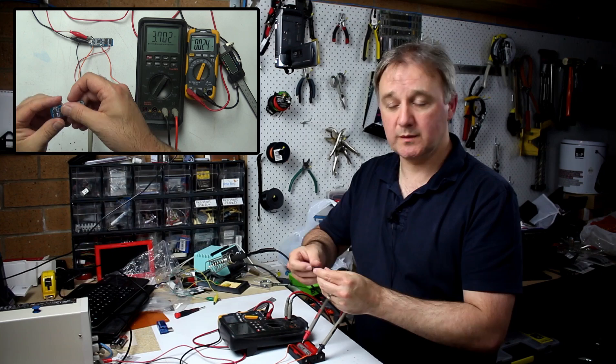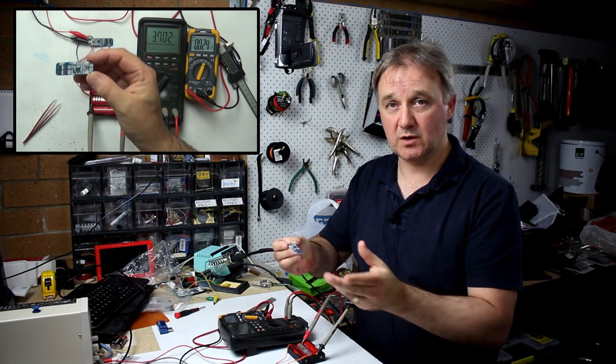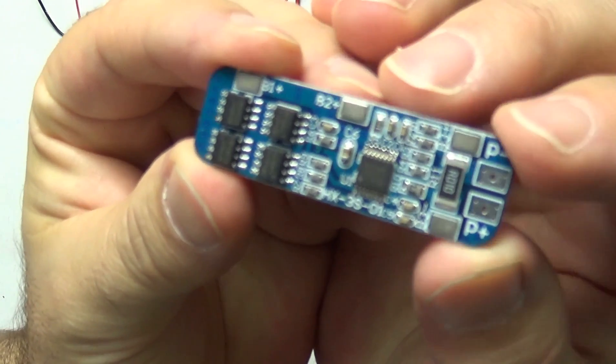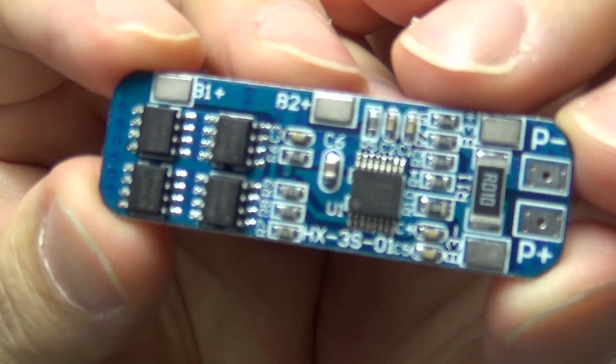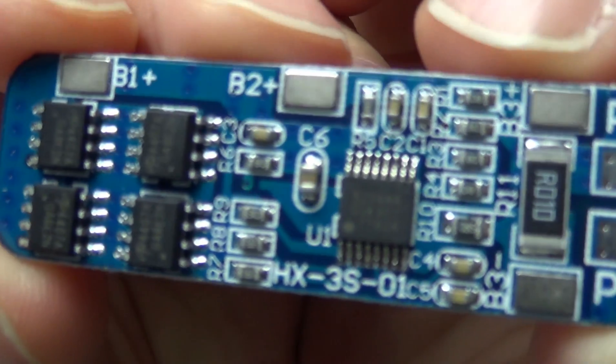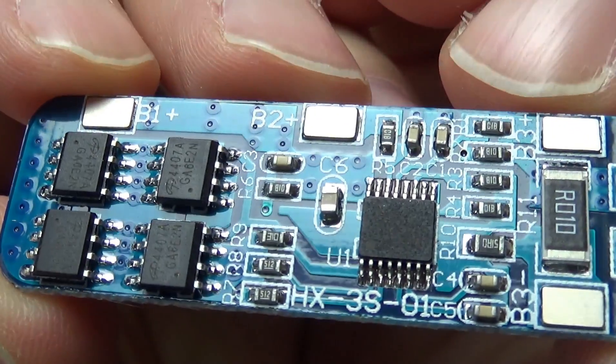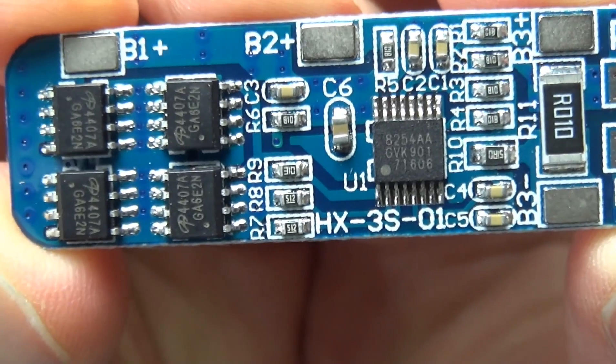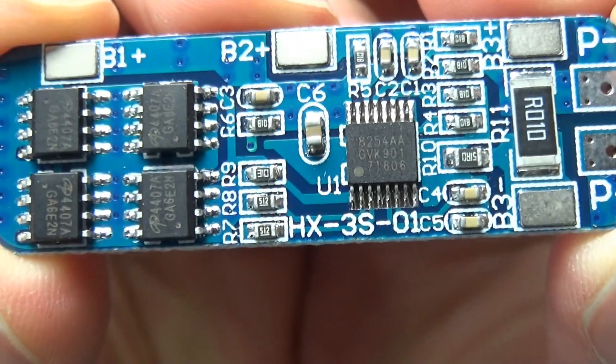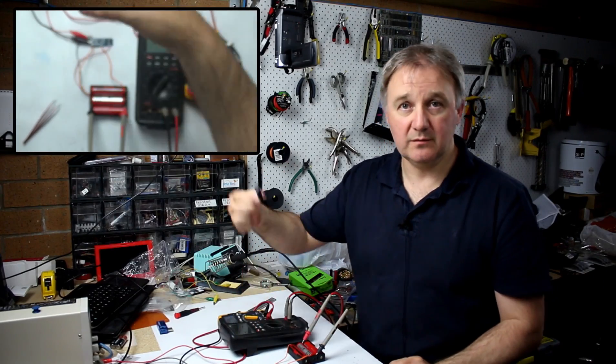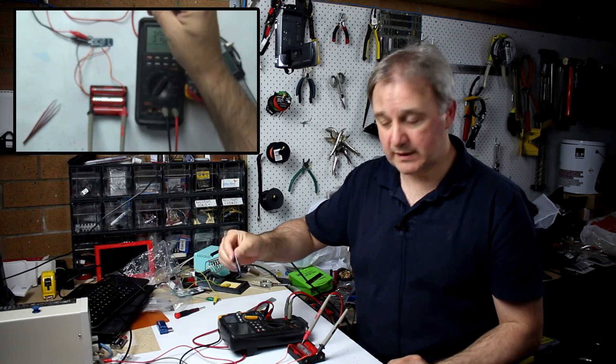So what we've got here, as I've shown you before in previous videos, is one of these battery management systems, little battery management boards. That's the board we're actually talking about here. This one runs three 18650 batteries, you can get different versions for more batteries.